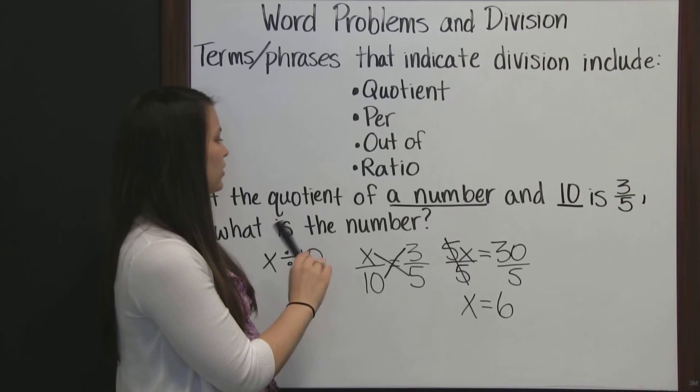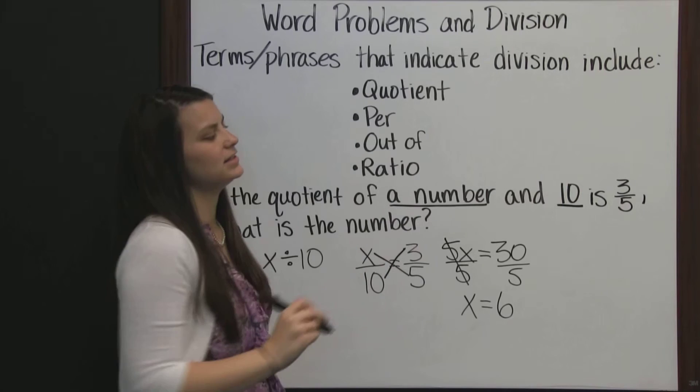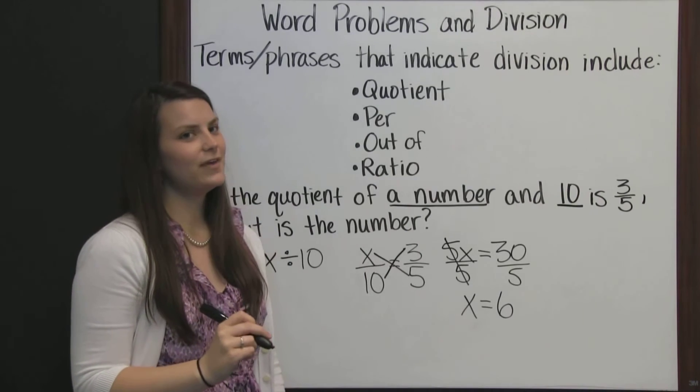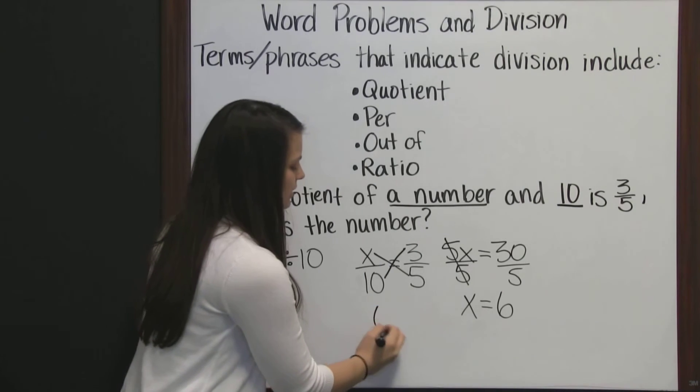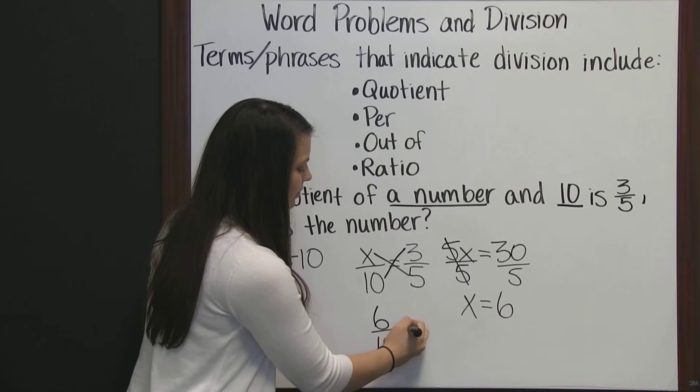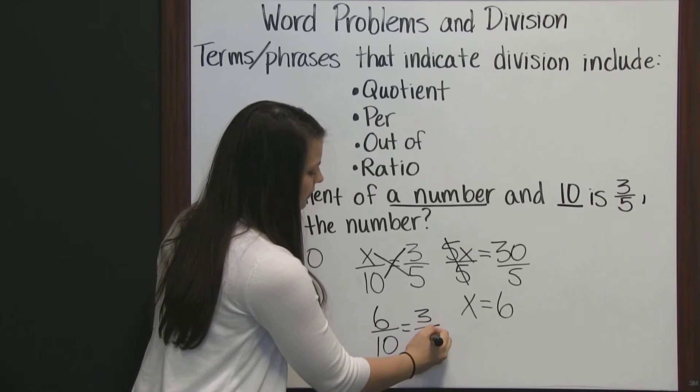So the quotient of six and ten is three-fifths. And that's true. Six-tenths does simplify to be three-fifths.